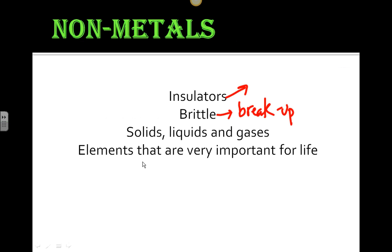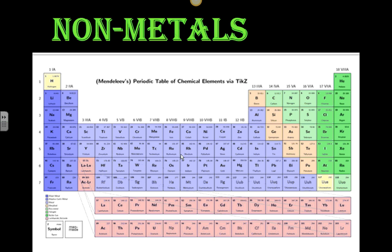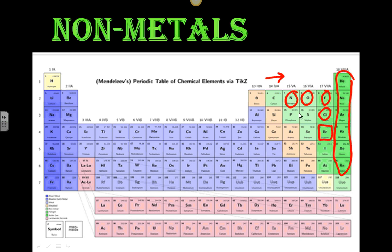And they are also the elements that usually are very important for life. If we see here carbon, nitrogen, oxygen, phosphorus, and sulfur, very important for life. So all over here in this top right-hand corner of the periodic table are the non-metals.